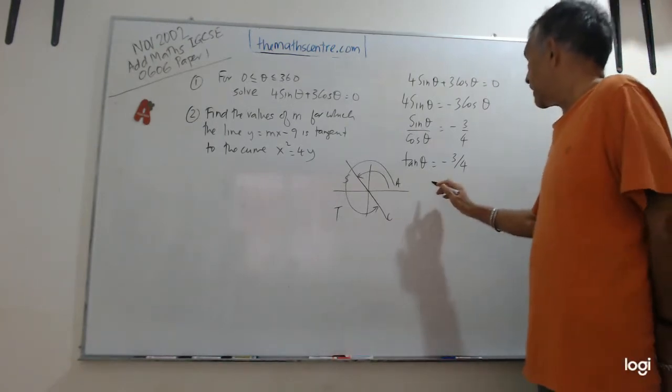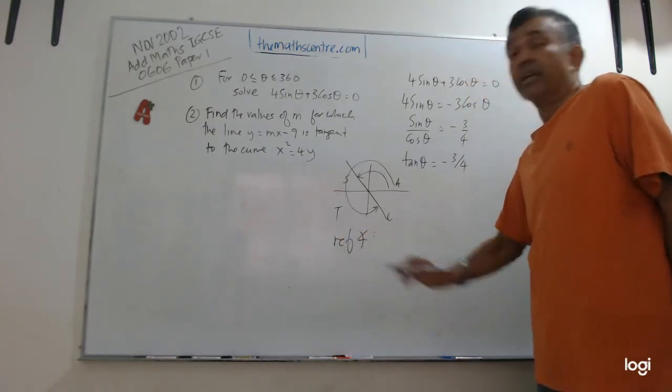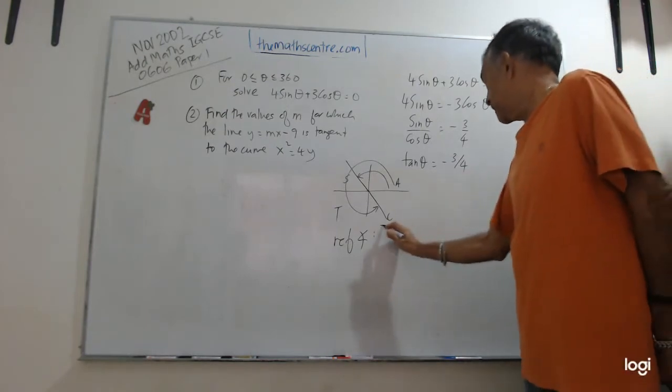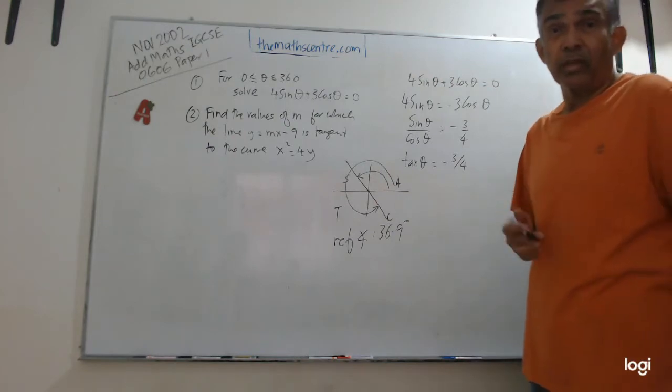So we need the reference angle. Plug the number into your calculator. The reference angle, the reference angle is the acute angle related to this angle, will be 36.9 degrees. I've done that already. I'll use the calculator.